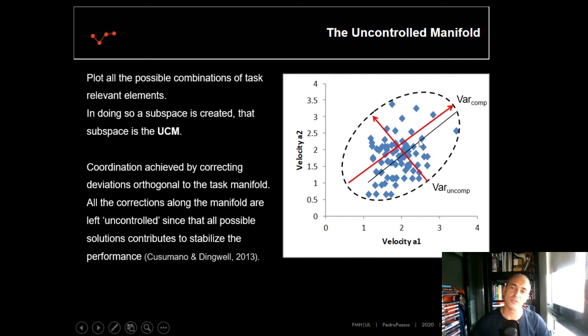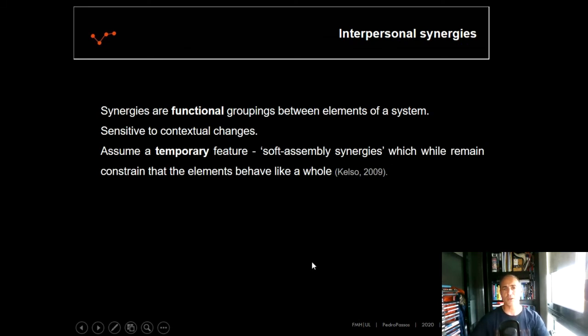We can also compute this variance here. And the output is quite simple to understand. It is a ratio. If the variance, the good variance, the compensated variance, will be higher than the bad variance, the uncompensated variance, the UCM will be above 1. And as LaTache said in the paper 2010, if we have a UCM above 1, we have a synergy. And a UCM below 1, which means that we don't have a synergy.